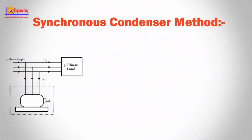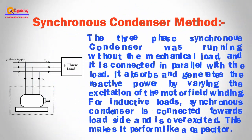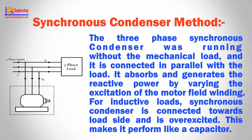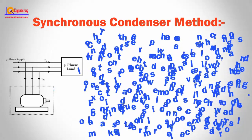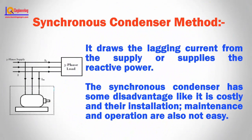Power factor correction by using the synchronous condenser method. The three-phase synchronous condenser runs without a mechanical load and is connected in parallel with the load. It absorbs and generates reactive power by varying the excitation of the motor field winding. For inductive loads, the synchronous condenser is connected towards the load side and is overexcited, making it perform like a capacitor. It draws lagging current from the supply or supplies reactive power. The synchronous condenser has some disadvantages: it is costly and its installation, maintenance, and operation are also not easy.